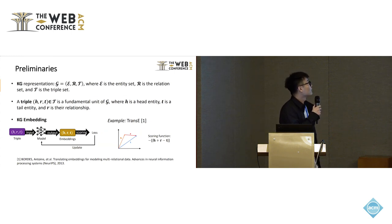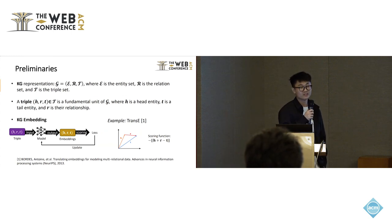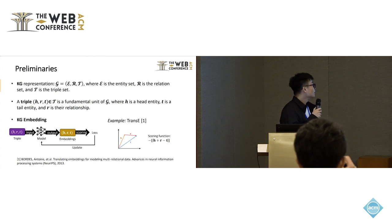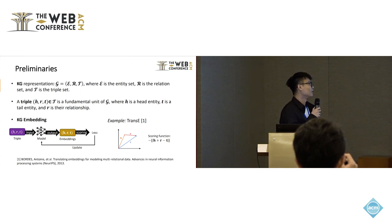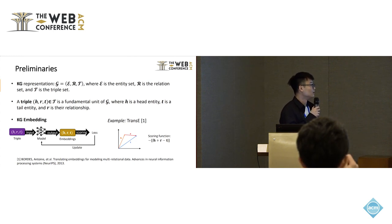Before introducing our method, I will give some preliminaries. A knowledge graph has three sets: an entity set, a relation set, and a triple set. A triple is a fundamental unit of a knowledge graph, where H is the head entity, T is the tail entity, and R is their relationship. In the KGE embedding process, the input of the KGE model is a triple and the output is a triple embedding. The trainer uses the embedding and a scoring function to calculate a loss, and uses the loss to update the KGE model. For example, if the KGE model is TransE, the scoring function is minus the norm of H plus R minus T, and the optimized objective is to minimize the scores of all triples in the training dataset.